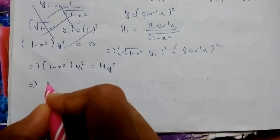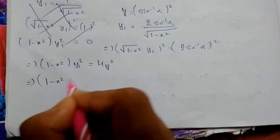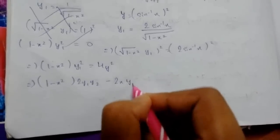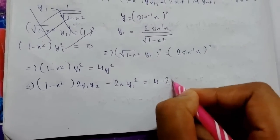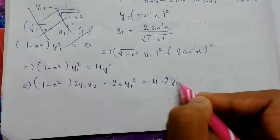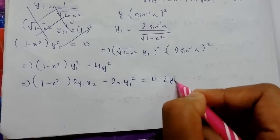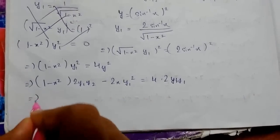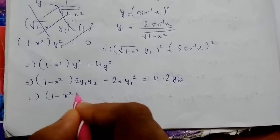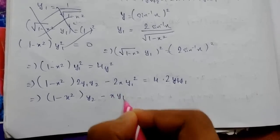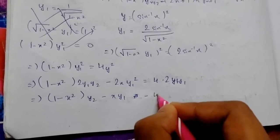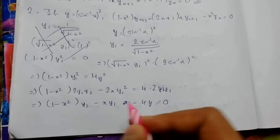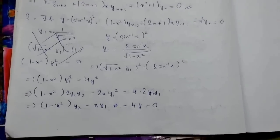Differentiating (1−x²)·y₁² = 4y: we get (1−x²)·2y₁·y₂ − 2x·y₁² = 4·2y·y₁. Dividing through by 2y₁ and simplifying: (1−x²)·y₂ − x·y₁ − 4 = 0. Now we again need to differentiate this n times using Leibniz's theorem.